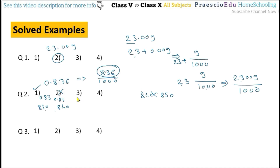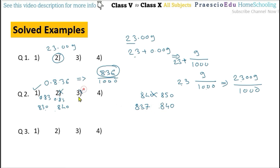Option number 3: 0.837 means 837 and 0.84 means 840. Since 836 is before 837, it cannot lie in this range, so option 3 is also incorrect. Option number 4: 0.8 means 800 and 0.83 means 830 — 836 also cannot lie in this range, so option 4 is also incorrect. That means option number 1 is the only correct answer.